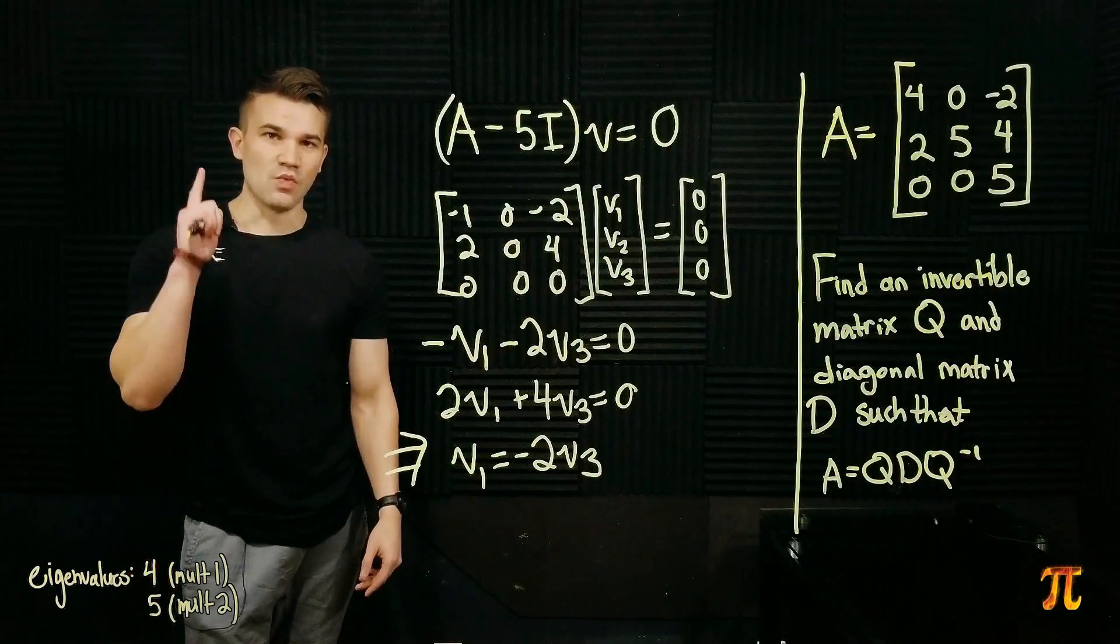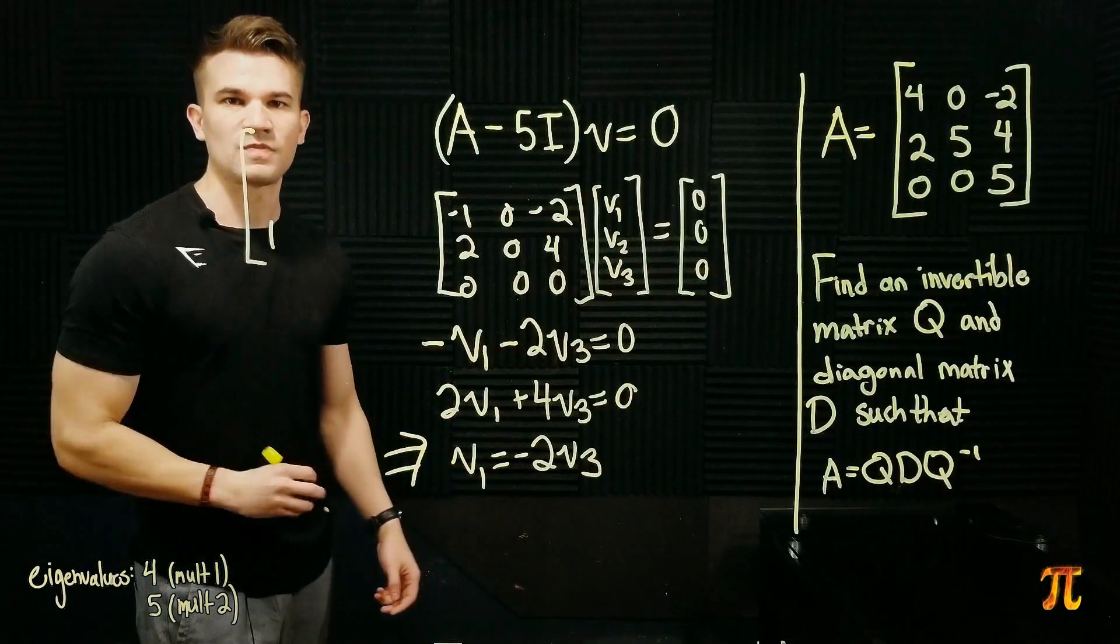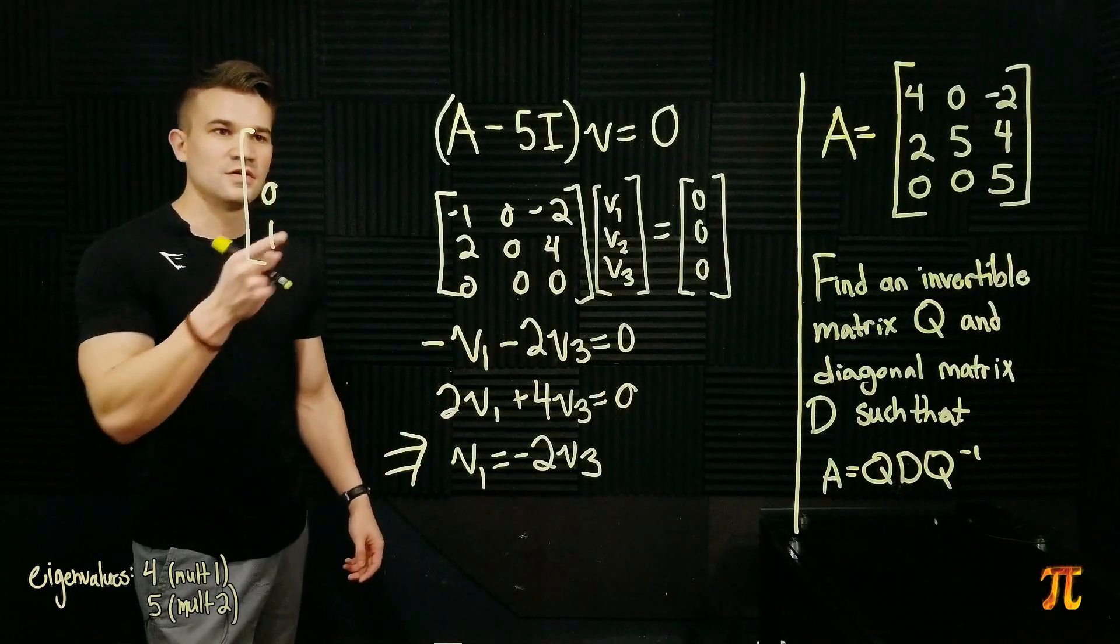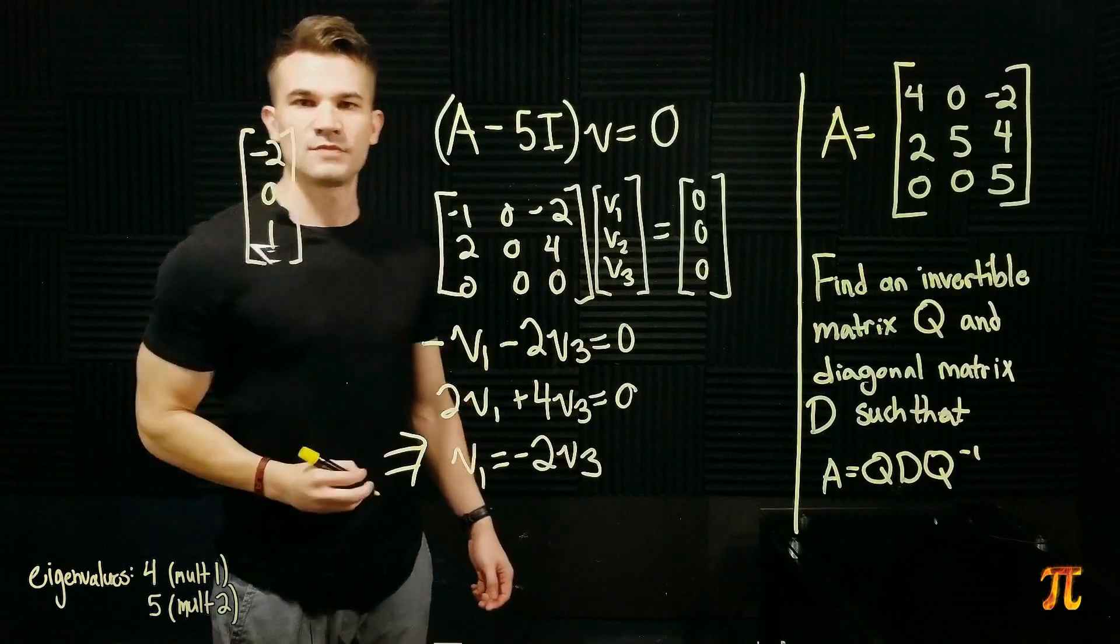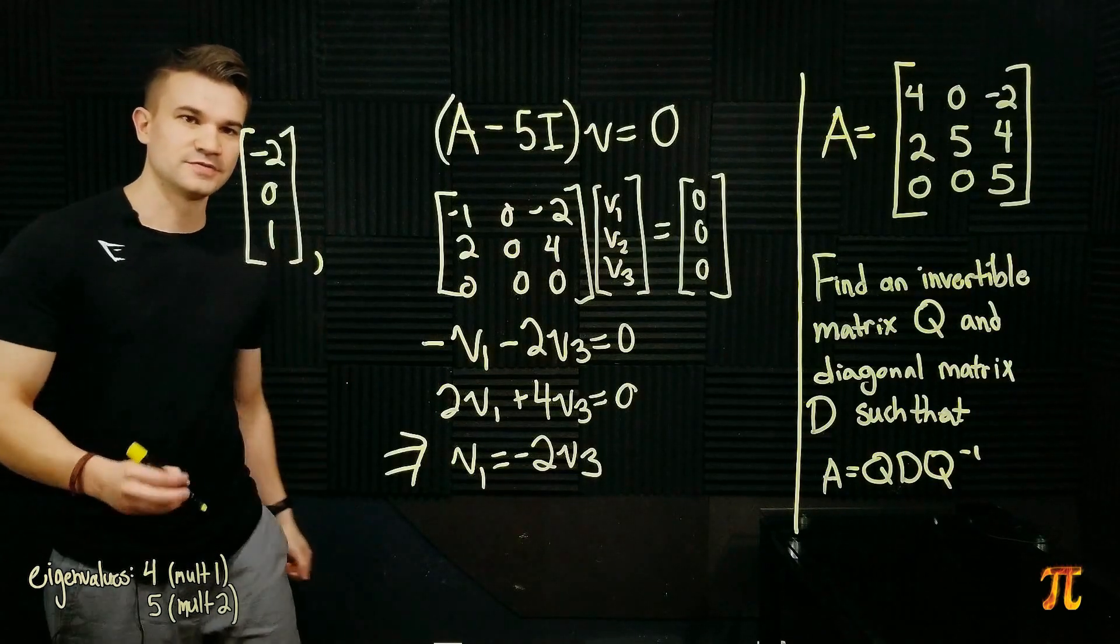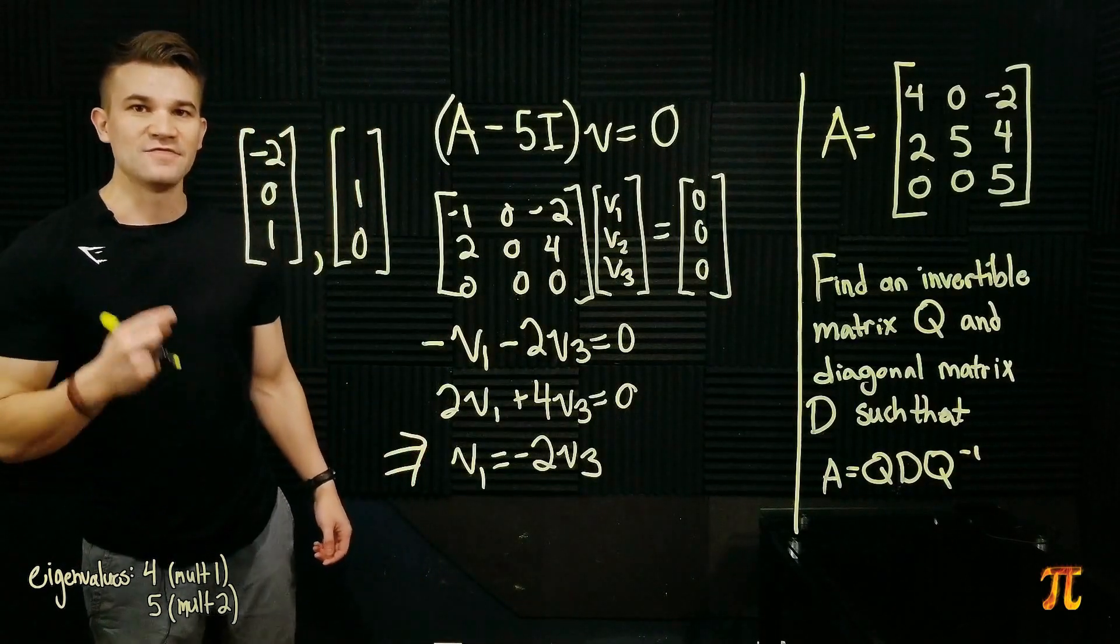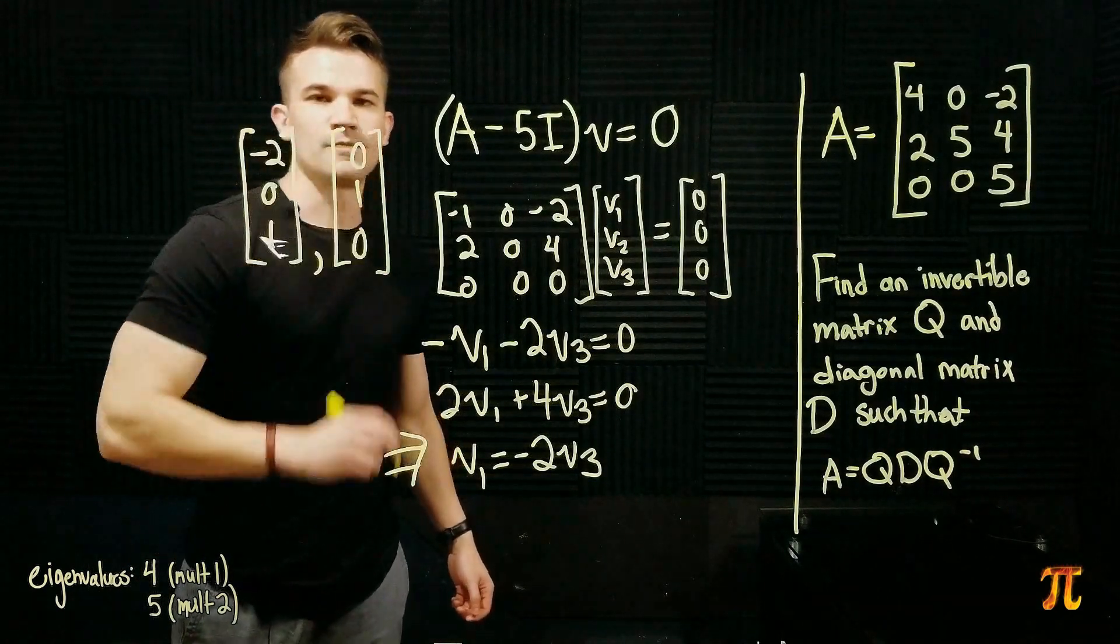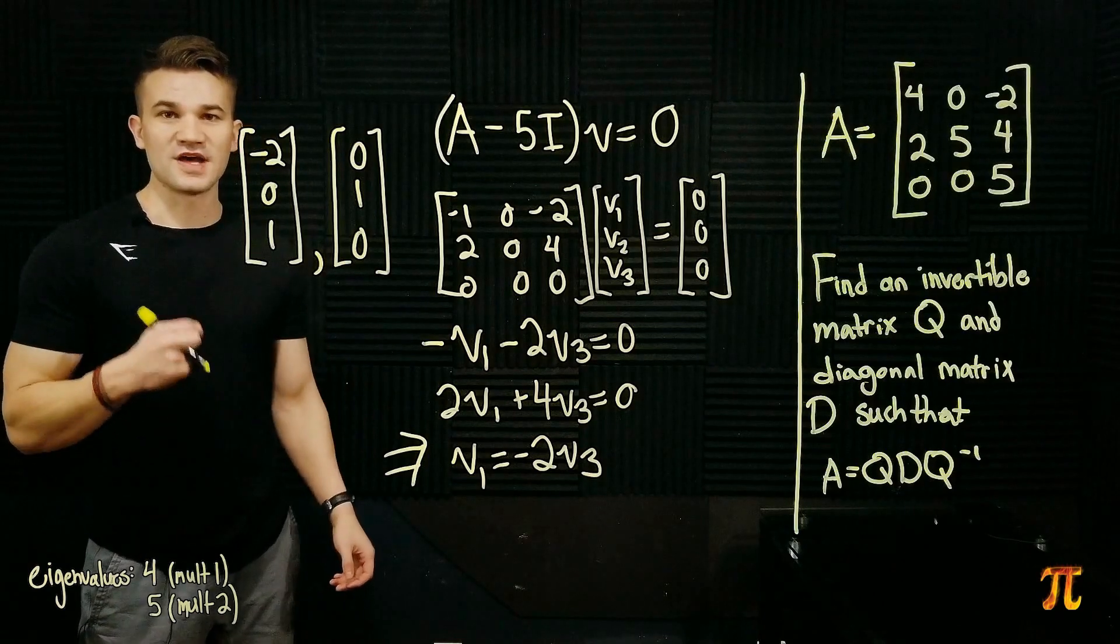The way we do that is we're going to pick 1 for one of the free variables and 0 for the other. So, let's pick 1 for V3 and let's pick 0 for the other free variable, V2. And V1 is determined by V3. It is going to be negative 2. So, here is an eigenvector. Now, do the opposite. Let's pick 0 for V3, let's pick 1 for V2. So, here are the two eigenvectors that we can use to form our basis that corresponds to the eigenvalue of 5.